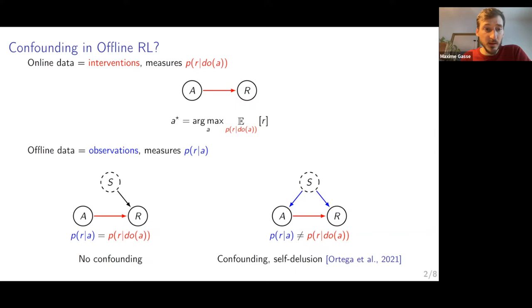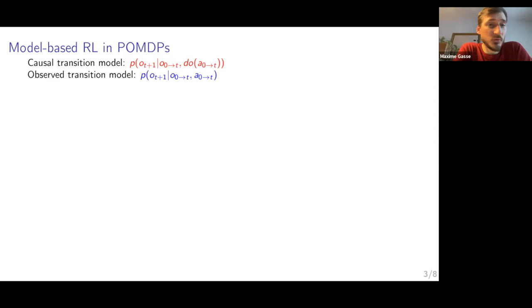What about the more general case? Say that we're looking at the general partially observable Markov decision process. In that case, what you want is this causal model. You want the quality of reaching the next observation, given past observations and past actions that you made yourself. So again, we have these two operators. This is what you want.